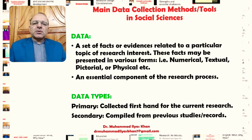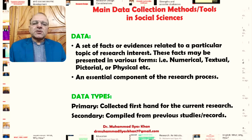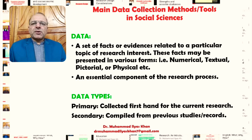Now there are two main types of data in social sciences. The primary data is the data that is collected firsthand for the current research that we are conducting as researchers. While secondary data is data that is compiled from previous studies or records, so it is not essentially collected primarily for the research we are conducting.